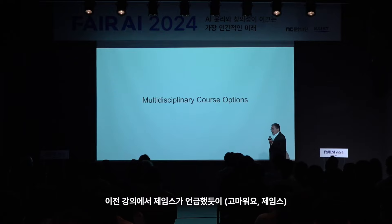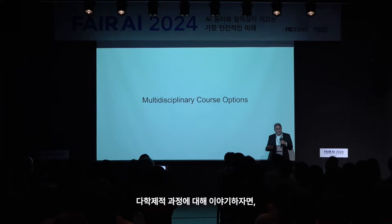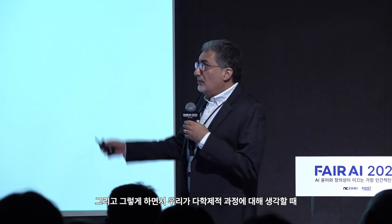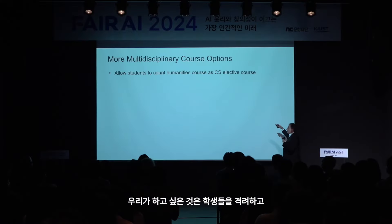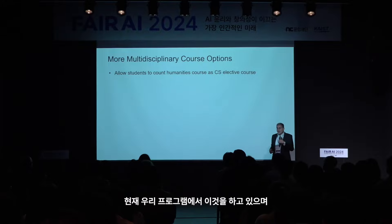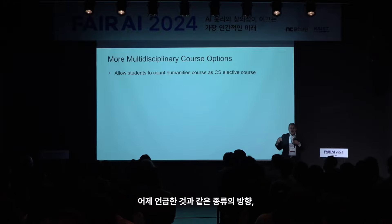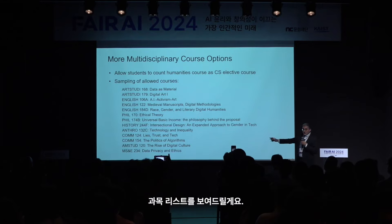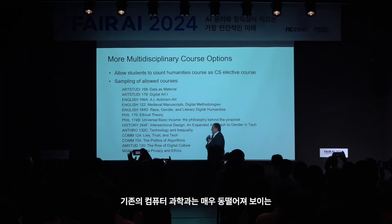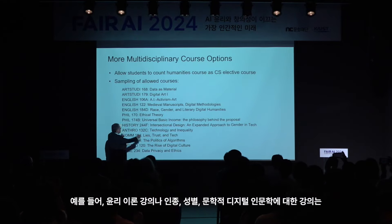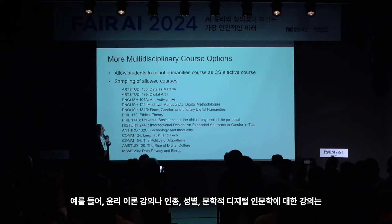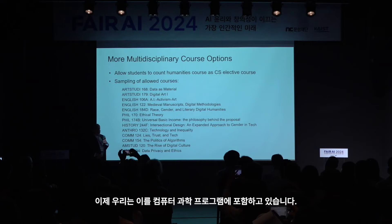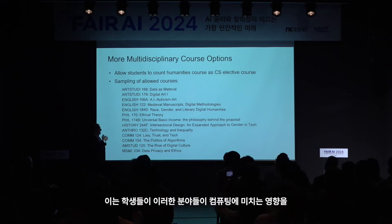For multidisciplinary courses, we encourage students to take humanities and social sciences courses that count toward the CS program. This includes courses on ethical theory, race, gender, literary digital humanities—things traditionally outside computer science—offered in different departments. The goal is to give students more ways to think about how these fields impact computing.